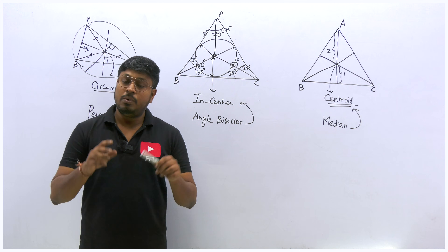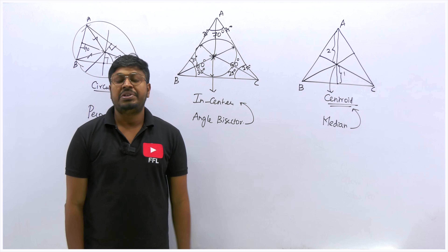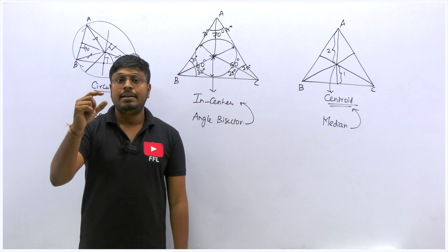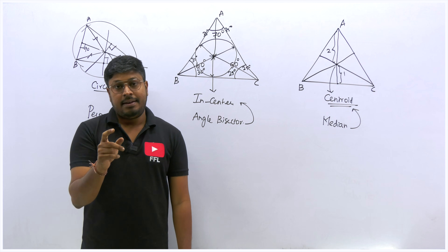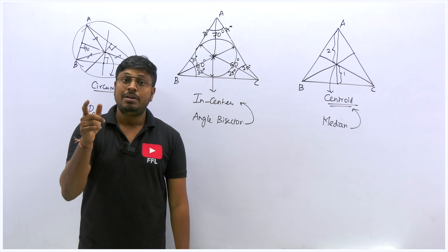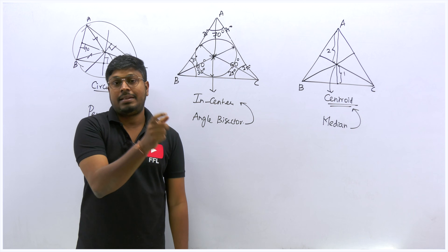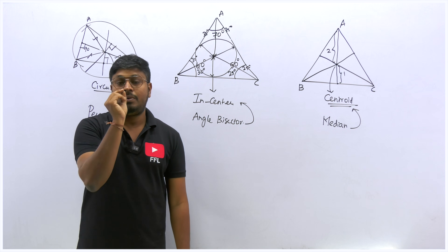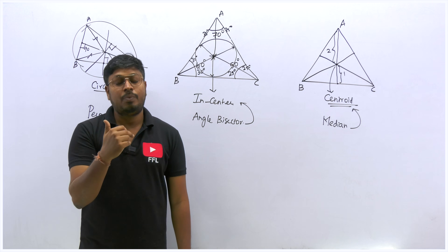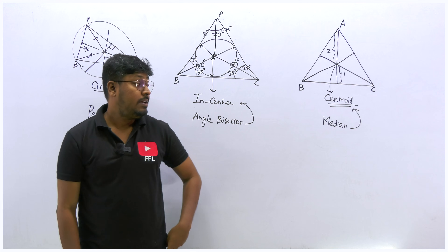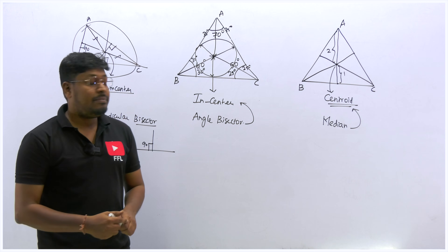Always remember: when you see incenter in a question, the first word that should come to mind is angle bisector. When you see circumcenter, remember perpendicular bisector. When you see centroid, draw a median — and the centroid divides the median in the ratio 2:1.